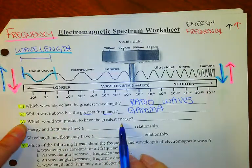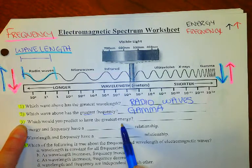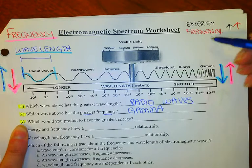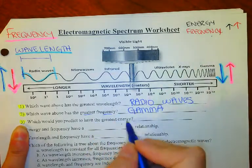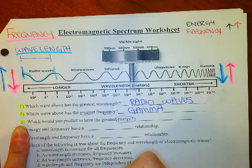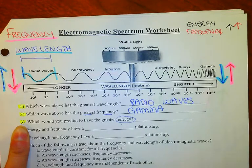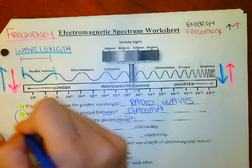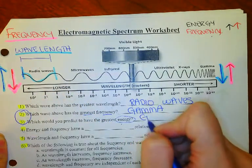Then it says, which would you predict to have the greatest energy? And again, we just said energy is dependent on frequency for waves. We can think of greatest energy as most dangerous. Which one's going to have the most energy and be most harmful to us? That's gamma rays too. So these ones are going to go together in the same direction.